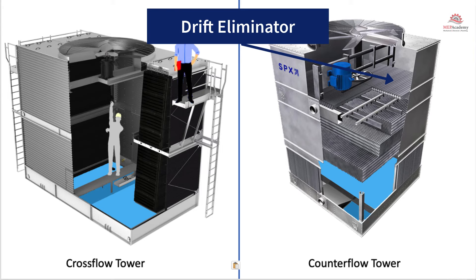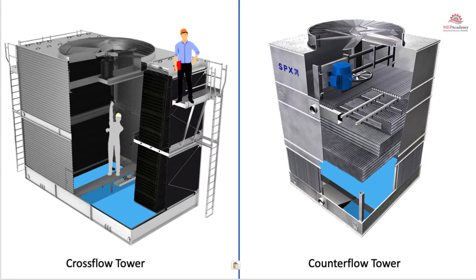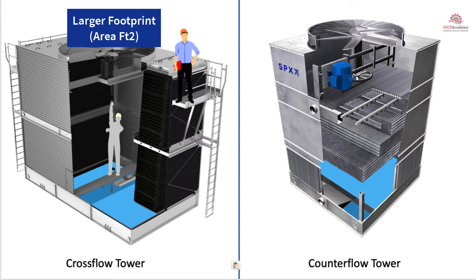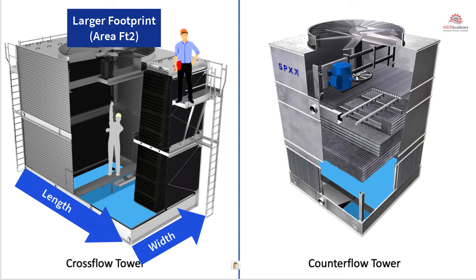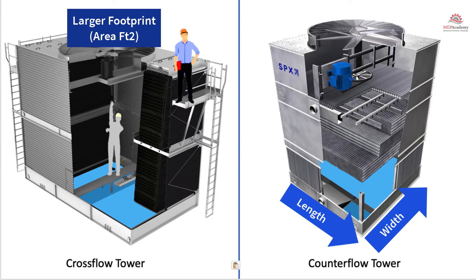Because we lose a little water, we'll need a makeup water pipe connected to the cooling tower to bring in additional water lost to evaporation, blow down, and drift. The cross flow tower usually takes up more area — the length times width is much greater for the same tonnage compared to the counter flow.